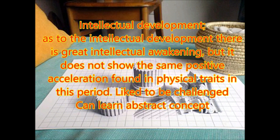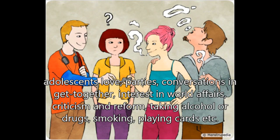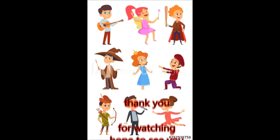Intellectual development during adolescence: there is great intellectual awakening, but it does not show the same positive acceleration found in physical traits. In this period, adolescents like to be challenged and they can learn abstract concepts. According to psychologists, during adolescence their social behavior conforms to norms, social codes, and ethics. They generally avoid anti-social activities looked down upon by society. Adolescents enjoy parties, conversation in get-togethers, interest in social affairs, criticism and reform, and some may engage in taking alcohol or drugs, smoking, playing cards, etc. — these are some common social interests found in adolescence.